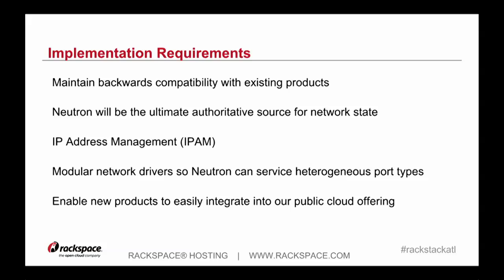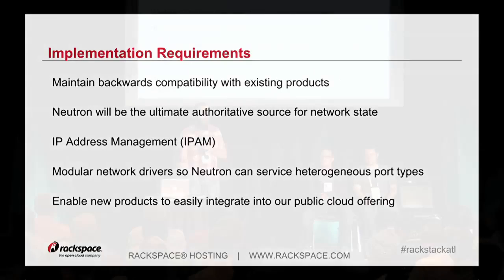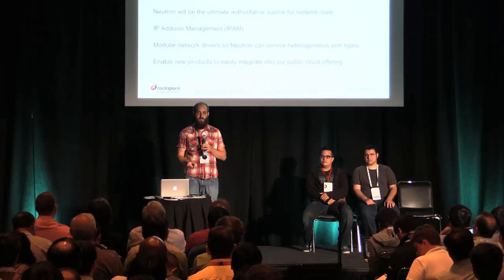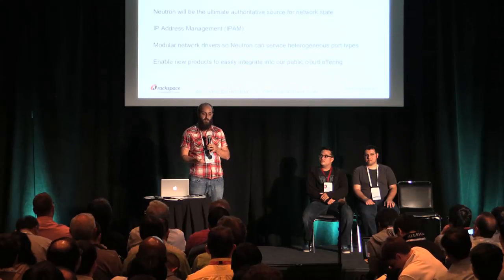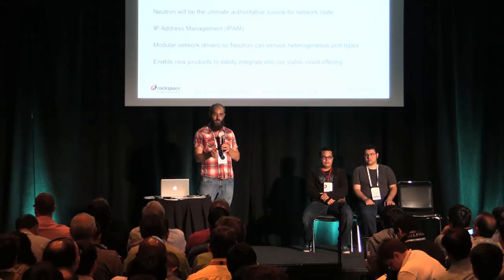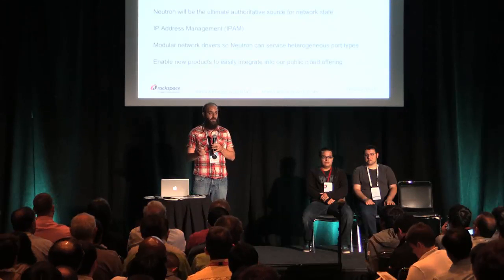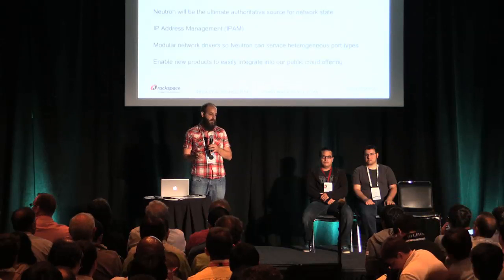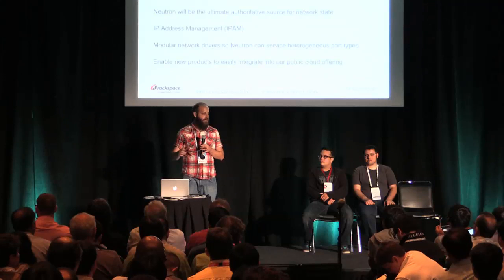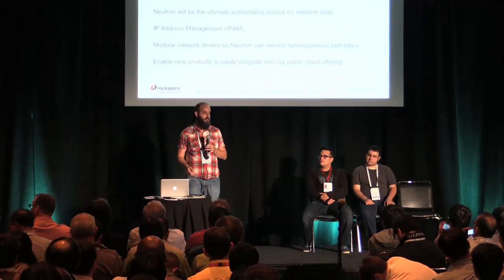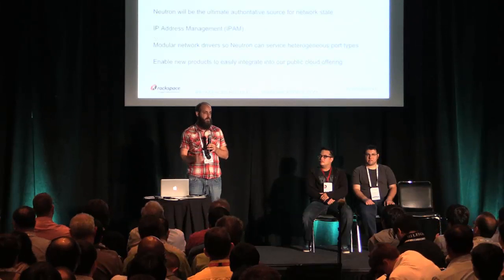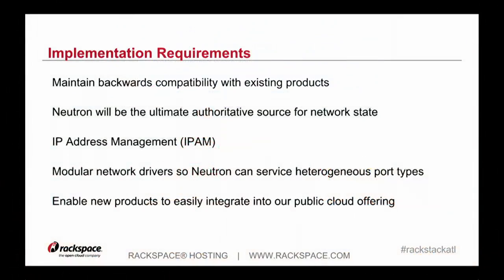Rackspace has a lot of different types of networks. We have overlay, bridge ports, and coming up we're going to have containers and a lot of other different types of things that Neutron's going to be plugging in. So we needed a very modular backend so that no matter what network you're plugging into, Neutron has a driver that can basically orchestrate that. This allows us, as new products in our wide portfolio get integrated into Neutron, to have an easy way to bring new products in, and it's much more upstream.